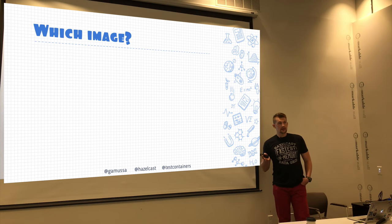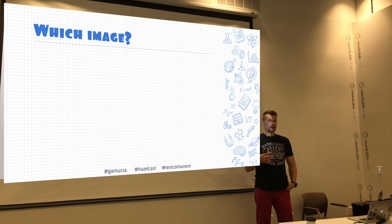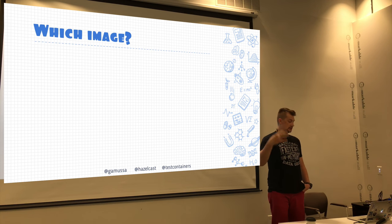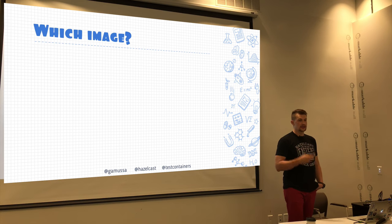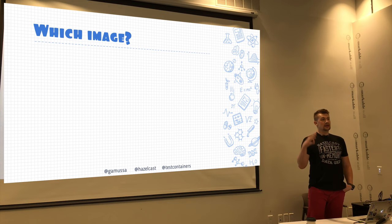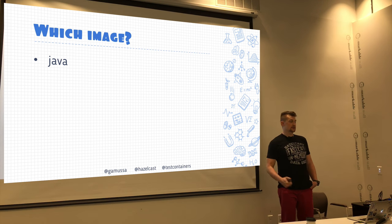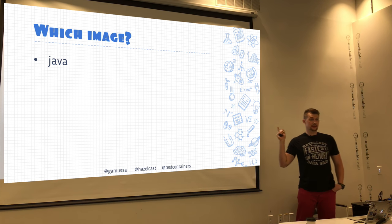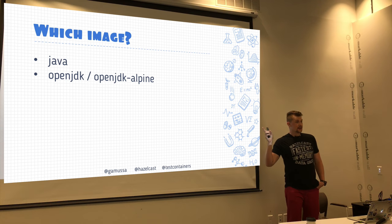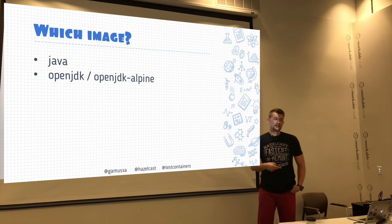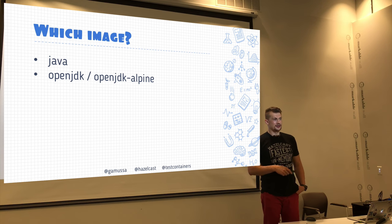Docker allows you to run containers, but a container needs to run some sort of image — a set of commands that can be easily reproduced. For Java developers, we need a base image. If you go to hub.docker.com and search 'Java,' it will say it's deprecated. You should use OpenJDK instead. Even though for a while developers were building their own images, OpenJDK is now providing Docker image distribution.